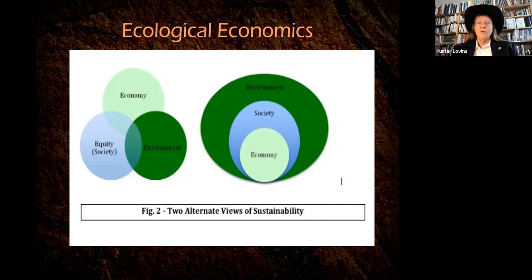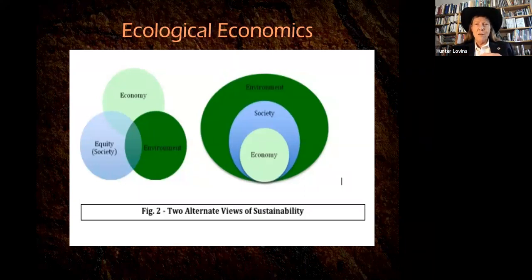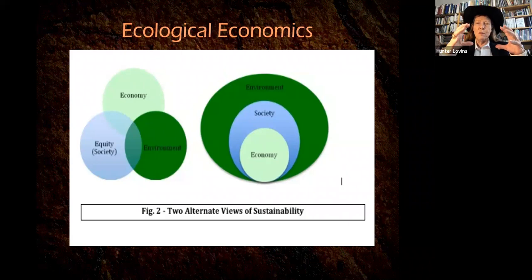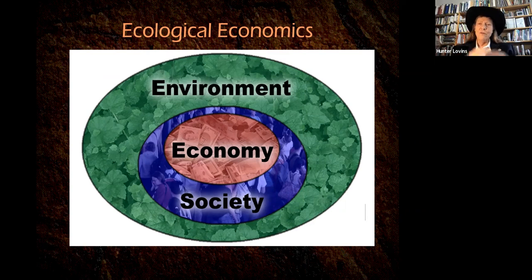John Elkington put forth the idea of the triple bottom line: economy, environment, equity — or people, planet, profit. The ecological economists argue these are a nested set of concepts: the economy, this little linear process, exists within society, which exists within the biosphere, and you need to understand that relationship and get it right. The economy only works if we have a healthy society; society only works if we have a healthy environment.